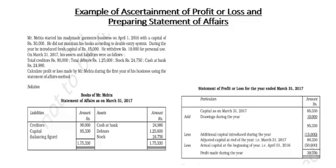The first step is opening capital. To prepare the statement of profit and loss, you need four items: closing capital, drawings, additional capital, and opening capital. In this question, opening capital is given, drawings are given, additional capital is given, but closing capital is missing.